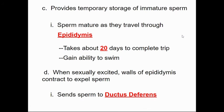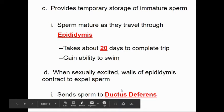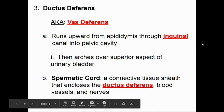The epididymis provides temporary storage for immature sperm. They spend about 20 days there working through the tubing, during which they gain the ability to swim. At this point movement is actually driven by peristalsis. Once signaled, the epididymis walls contract and expel the sperm into the vas deferens, also called the ductus deferens.